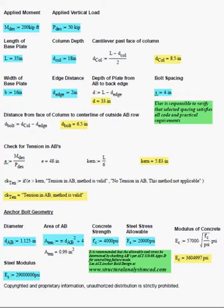In order to use the sheet, all you have to do is input your applied moments and axial load, the size of your base plate that you're going to be using, the size of your column, the edge distance of the anchor bolts and the anchor bolt spacing, the anchor bolt diameter, and the material properties of the concrete and base plate that you're using.